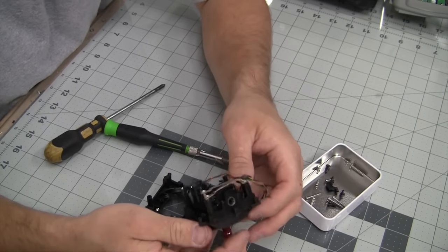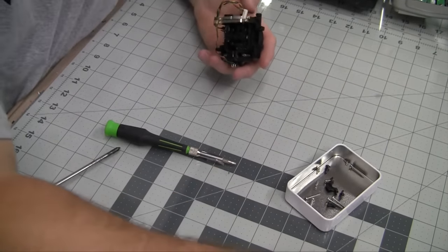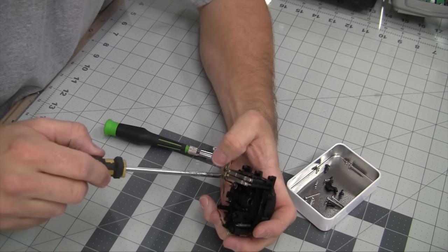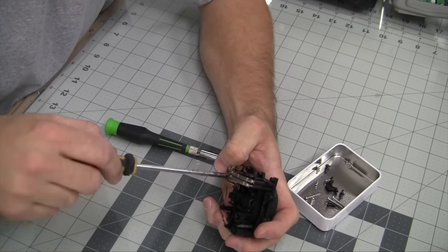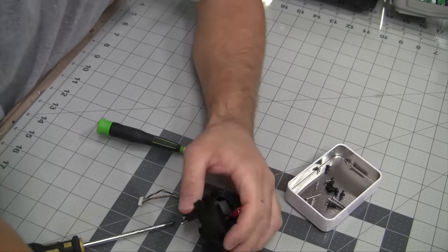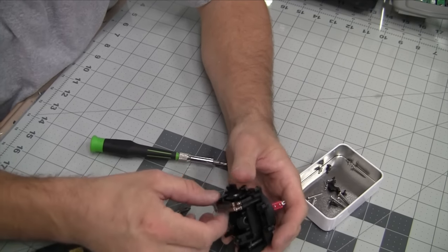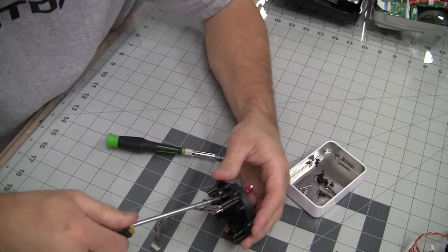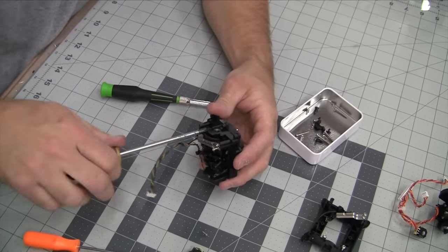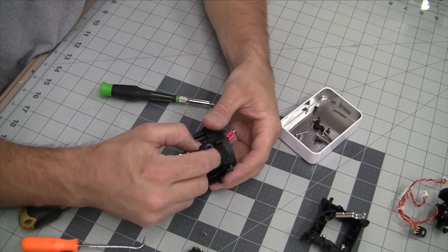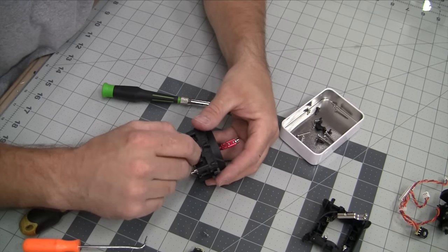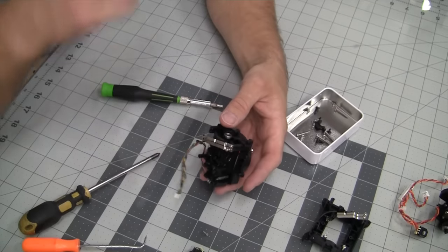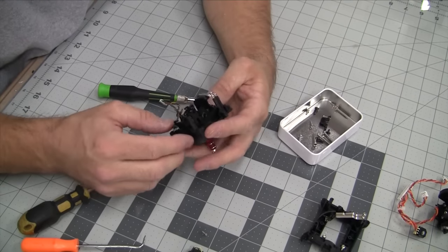So now we've got to do the same thing to the Aurora 9 gimbal that we just did to the Taranis one. So we'll take out these two screws first. And that just gets this out of the way. Take out these two screws. So we'll go ahead and pull off this plastic piece. We're not going to be using that.